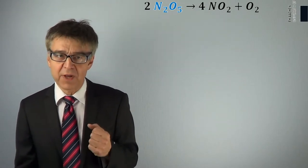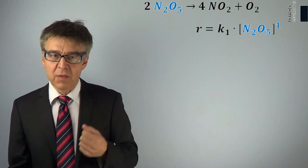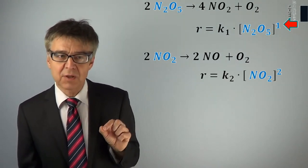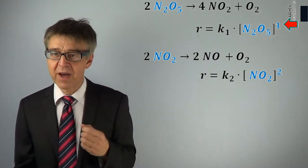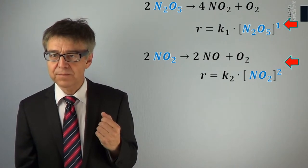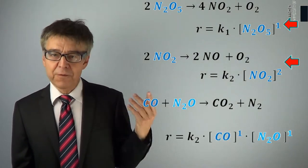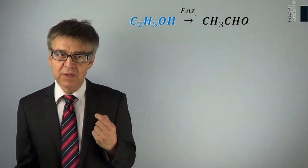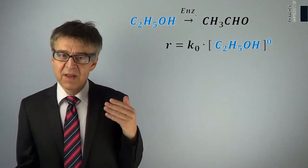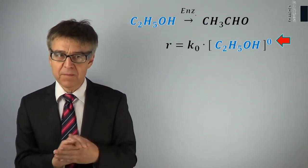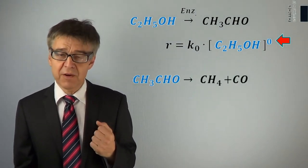Some examples. The decomposition of N2O5 is a first-order reaction; the rate is proportional to the N2O5 concentration. The decomposition of NO2, on the other hand, is a second-order reaction; the rate is proportional to the square of the NO2 concentration. The reaction CO plus N2O is overall second-order, first-order with respect to each of the reactants. The rate of enzymatic degradation of ethanol is not dependent on concentration — that is, this is a zero-order reaction. Fractional reaction orders are also possible; the decomposition of acetaldehyde follows a 1.5-order rate law.